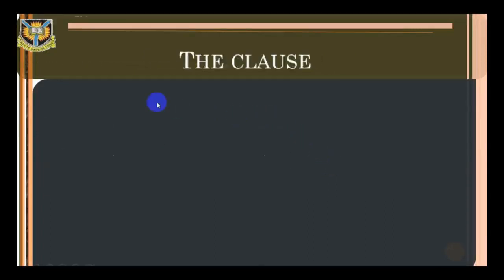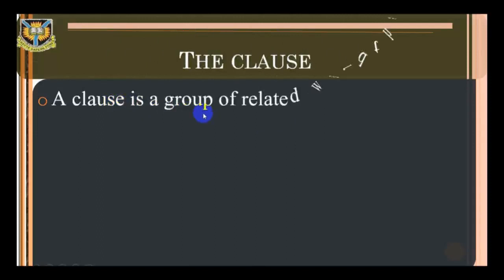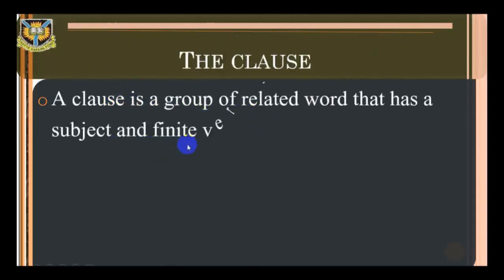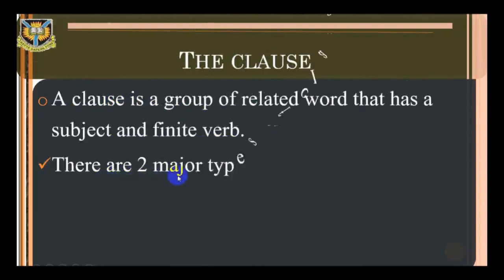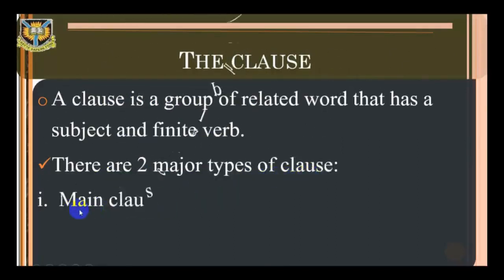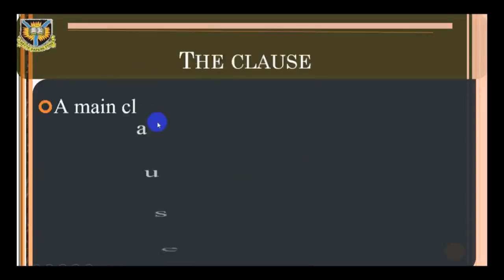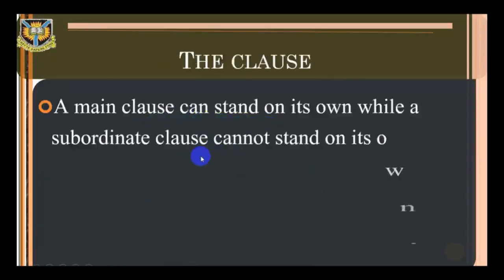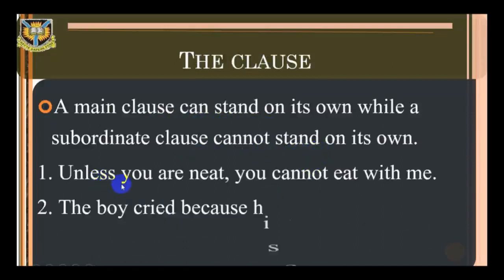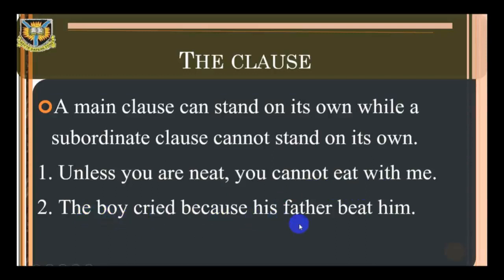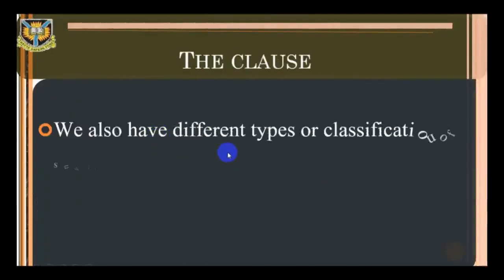The clause: a clause is a group of related words that has a subject and finite verb. There are two major types of clause: main clause, also known as alpha, and subordinate clause, or beta. A main clause can stand on its own while a subordinate clause cannot. For example: 'Unless you are neat, you cannot eat with me.' 'The boy cried because his father beat him.'